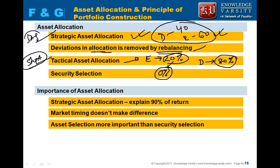Strategic asset allocation considers long-term market expectations along with the risk objective, return objective, constraints, and risk tolerance of the client. Tactical asset allocation, however, is a short-term technical decision — you deviate from the strategic asset allocation based on short-term market expectations. Tactical asset allocation parameters must also be specified in the investment policy statement.